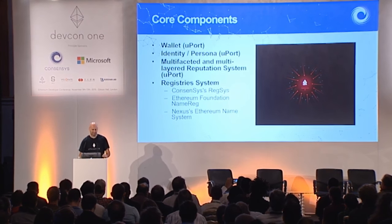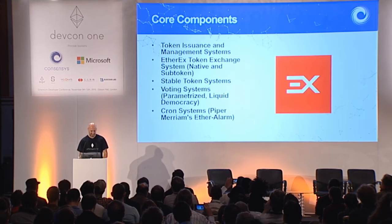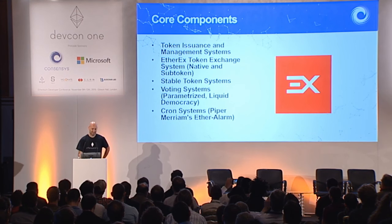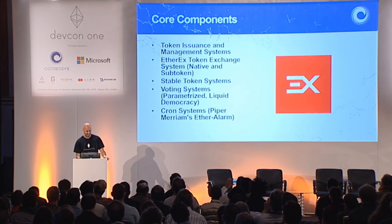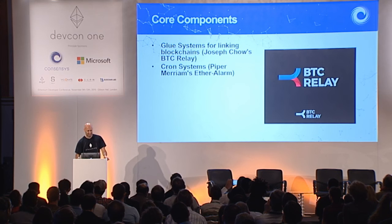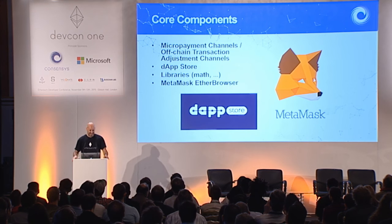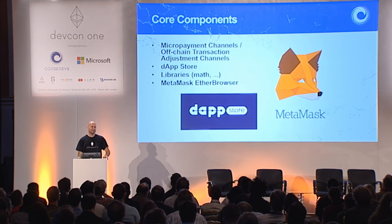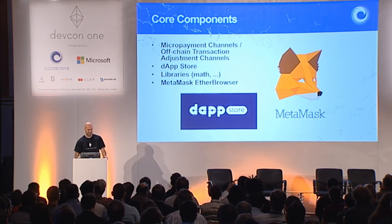Some of these core components include wallet identity, system registries, token issuance and management, token exchange, stable token systems, voting systems, cron systems, glue systems, and micro payment channels — another critical element for massive scalability.